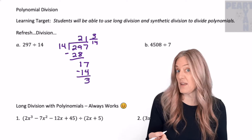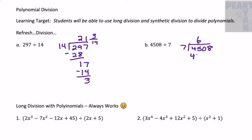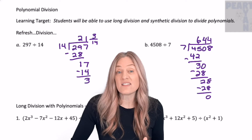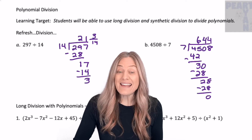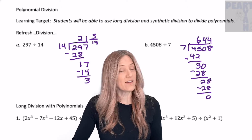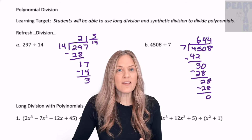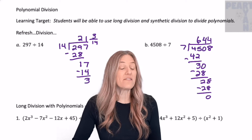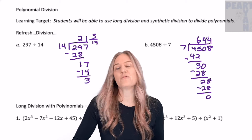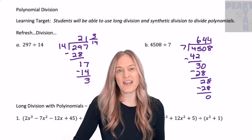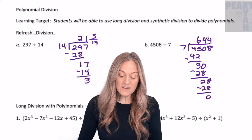Let's try example B. Notice that 7 goes into 4,508 evenly, so it's a factor of 4,508.